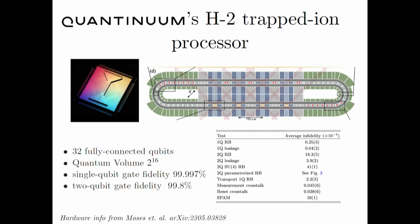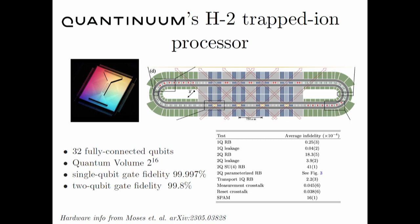Let me explain the platform we use: Quantinuum's H2 trapped ion processor that came out in May, with 32 fully connected qubits and excellent single- and two-qubit gate fidelities. The preparation circuit is quite simple. First, we prepare a symmetry-protected topological state — for condensed matter people, this is like a cousin of the topological insulator; for quantum information people, it's essentially a hypergraph state, a beefed-up version of the cluster state.